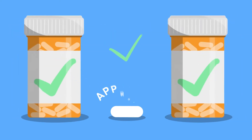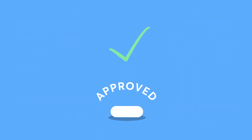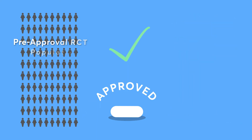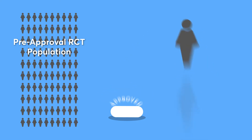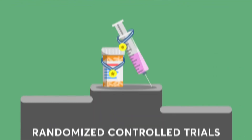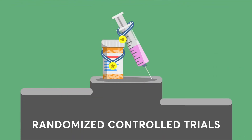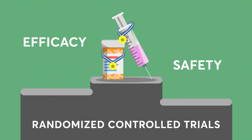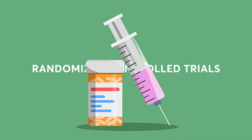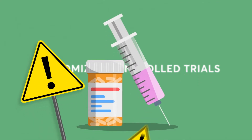When new drugs are brought to market, they've already been approved by regulatory agencies, typically based on data gathered from randomized controlled trials in small populations, like a few hundred to a few thousand patients. While randomized controlled trials are the gold standard for showing the efficacy and safety of a drug, they have some limitations with regards to fully understanding the safety of a medication.